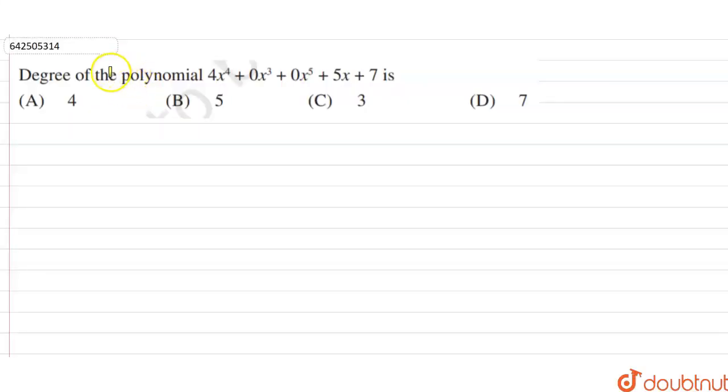Hi students, our question is: degree of the polynomial 4x^4 + 0x^3 + 0x^5 + 5x + 7 is?